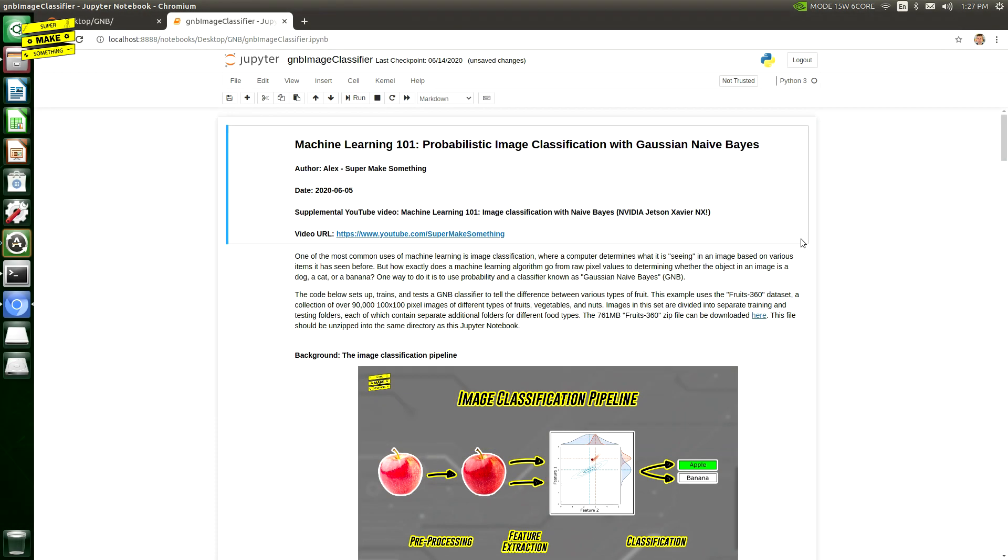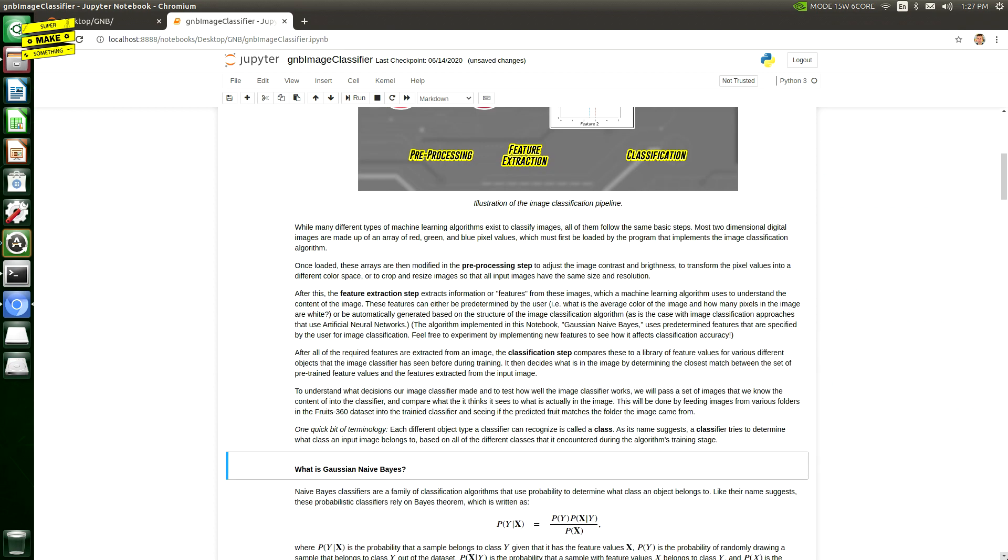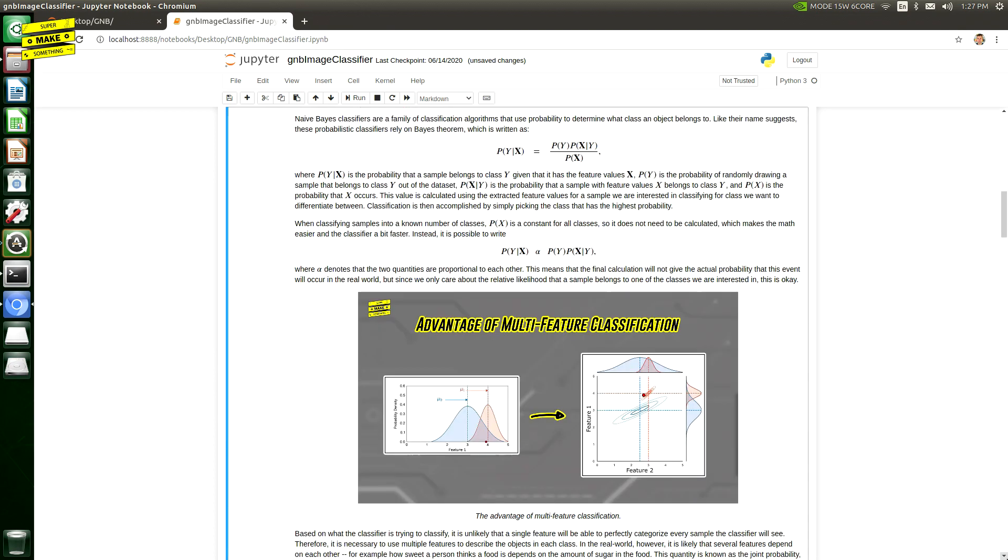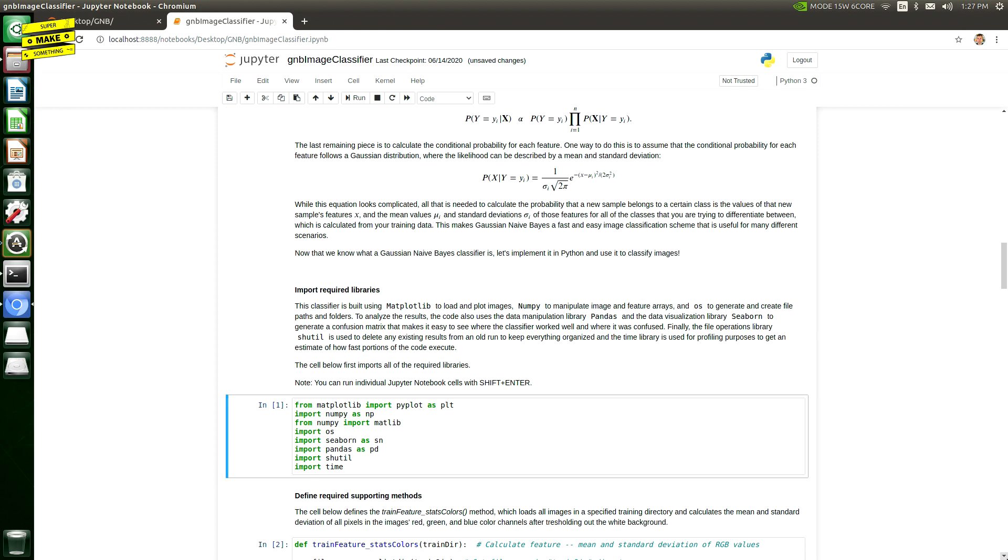To run the code, I simply highlighted the first cell of the Jupyter Notebook and then pressed Shift-Enter together. This ran the highlighted cell and advanced to the next one, allowing me to continuously press Shift-Enter until I had made it all the way through the notebook.